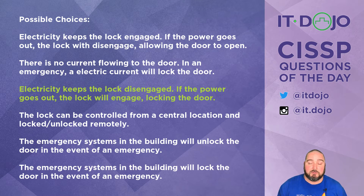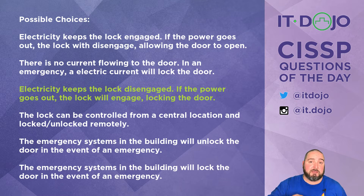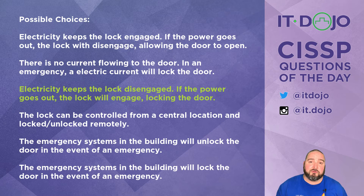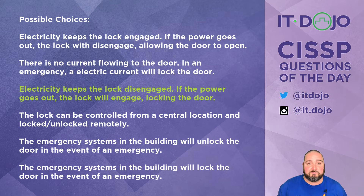One final note: both fail safe and fail secure locks almost always allow free egress, meaning if you're on the inside you're going to be able to get out no matter what the failure state is. This is particularly relevant for people needing to exit a building if it's on fire. Whether it fails safe or fails secure, you'll have free egress — you can get out, but you wouldn't necessarily be able to come back in if it's fail secure, and if it's fail safe it's going to fail to an unlocked state.